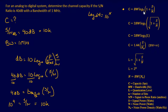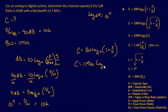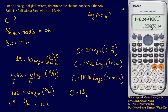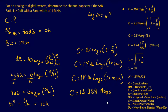Now we plug into the capacity equation: C equals bandwidth times log base 2 of (1 plus signal-to-noise ratio). That's 1 megahertz times log base 2 of (1 plus 10,000). Adding 1 is almost negligible but still necessary. Plugging into the calculator gives us a final answer of 13.288 megabits per second. That is our channel capacity.